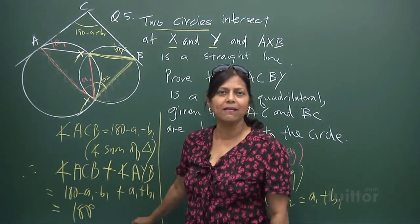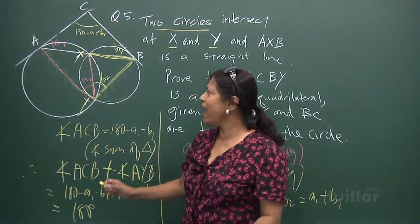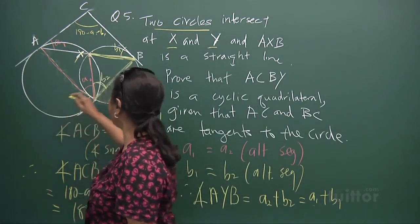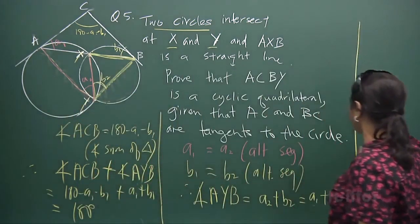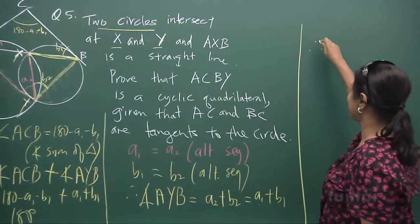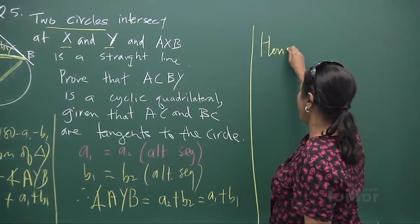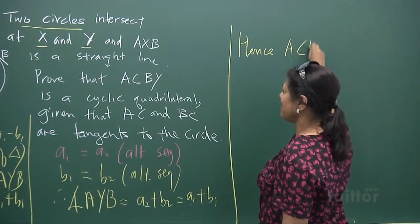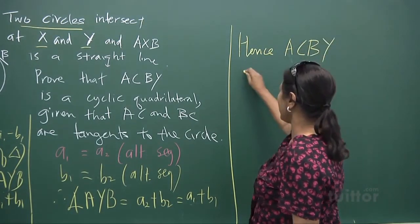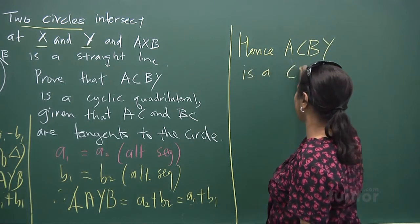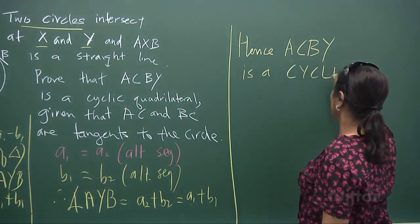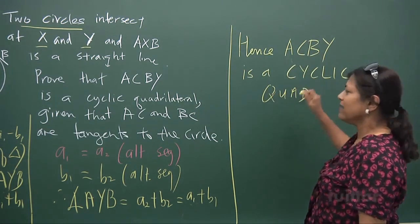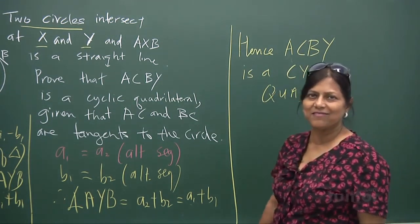They are opposite angles of a cyclic quadrilateral. Hence, therefore, ACBY is a cyclic quadrilateral because the opposite angles give you 180 degrees.